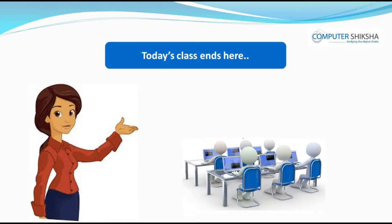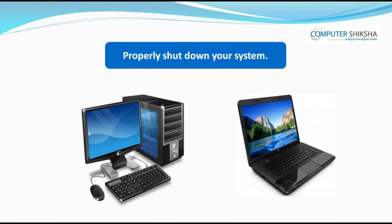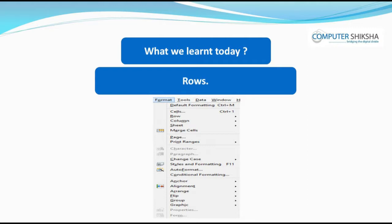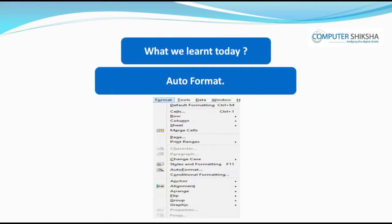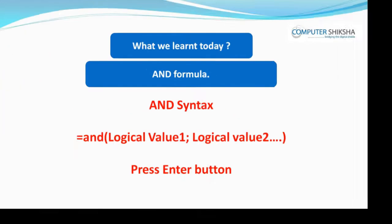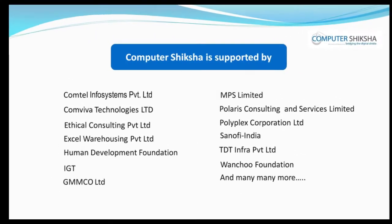Today's class ends here. Save your file and then shut down your computers properly. Today, you learnt about some of the options of the Format Menu like Cells, Rows, Columns, Sheet, Merge Cells, Page, Print Area, Auto Format, and Conditional Formatting. And then, you practiced the formulas for IF, AND, OR, COUNT, and COUNT blank. Computer Shiksha is supported by.